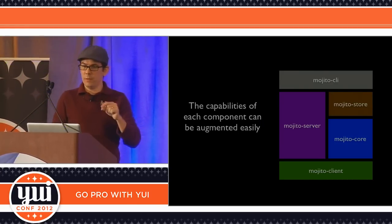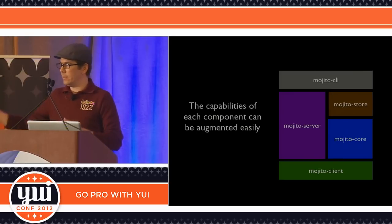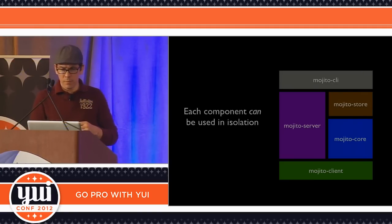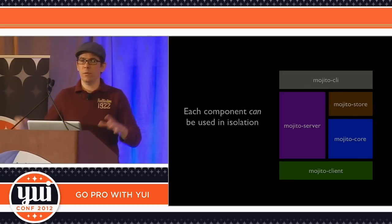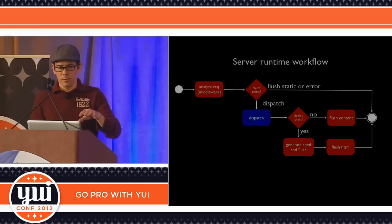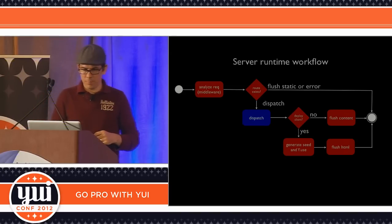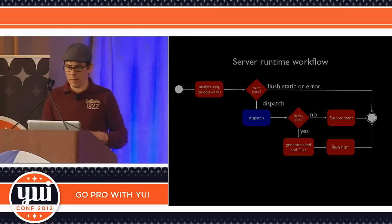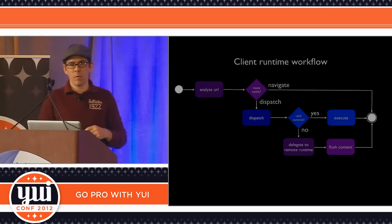One of the main goals is that the capabilities of each component could be potentially augmented — we want very small components that you can extend depending on your requirements. Another goal is that each component can be used in isolation, meaning you don't necessarily have to use all of Mojito; you might just use the file system abstraction, for example. There are diagrams for the server and client runtime workflows, but I'll skip those for time as most logic is extracted through these five components.